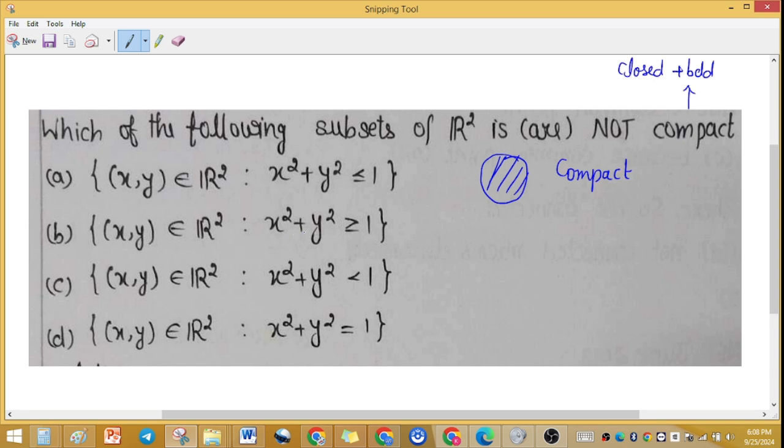In option B, x² + y² ≥ 1 is the outer portion. It will consider the boundary, but it's the outer portion which is not bounded. Not bounded means not compact, so this will be our answer.